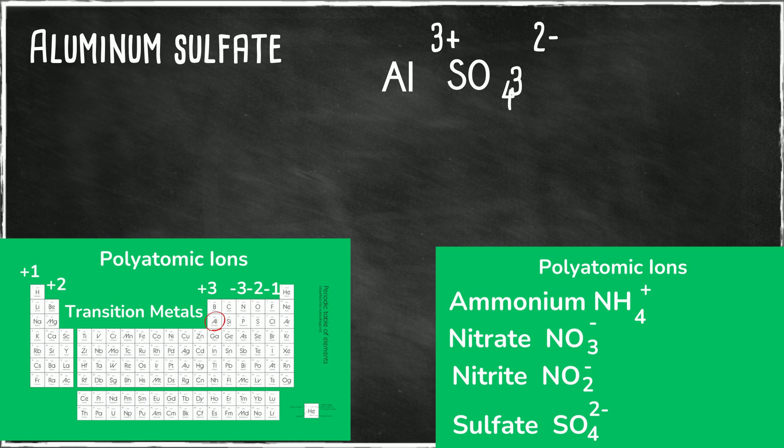3 goes with sulfate. The two will go with aluminum. So that gives you Al2 in parentheses SO4 and then a 3 on the outside which tells you that you need three of them.